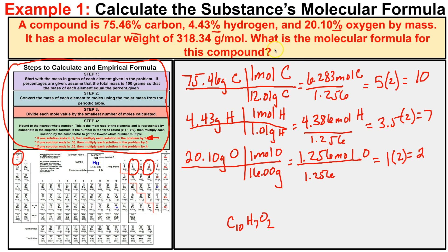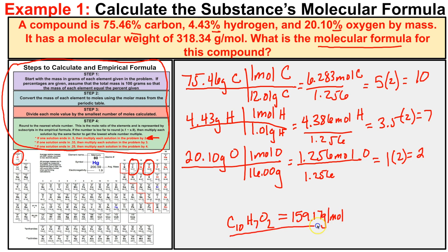That is our empirical formula, but the question is asking for the molecular formula. To get the molecular formula, we need to find the molar mass of the empirical formula. We take 10 times 12.01 (carbon), plus 7 times 1.01 (hydrogen), plus 2 times 16.00 (oxygen), and add all of that together. We end up with 159.17 grams per mole — that is the molar mass of the empirical formula. The problem tells us the molar mass of the actual compound is 318.34 grams per mole.